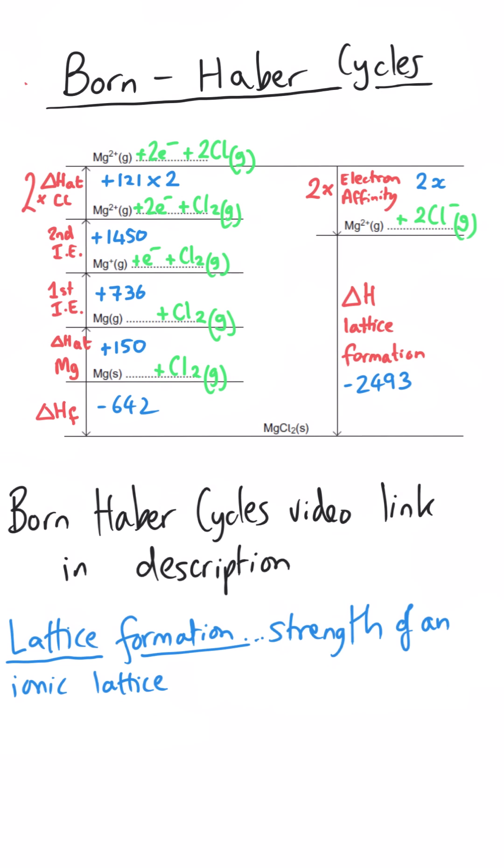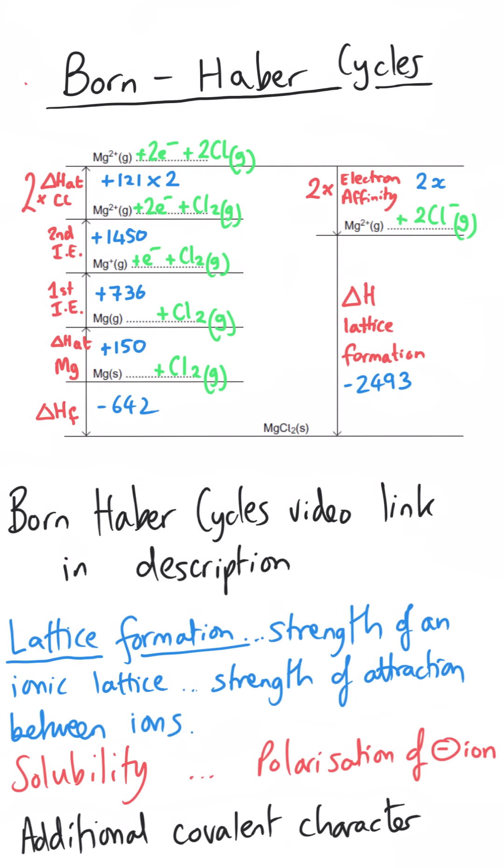Or maybe following up with some of the implications of Born-Haber cycles, such as how strong is that lattice? In other words, how exothermic is this enthalpy of lattice formation? And so crossing over with the hydration enthalpies that we've discussed before about how strongly the water is attracted to the positive or negative ion. And so how soluble a particular substance is. So that's using some of the Born-Haber cycle skills, so the strength of the ionic lattice, and tying it into the calorimetry experiment, such as dissolving something in an enthalpy of solution setting, and maybe talking about polarisation and additional covalent character along the way.